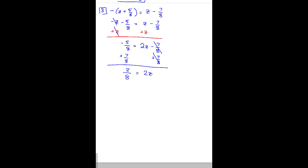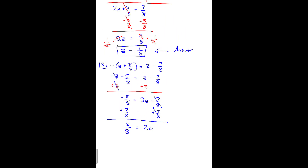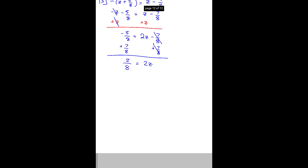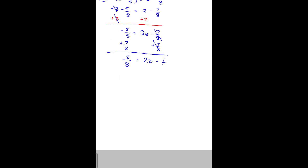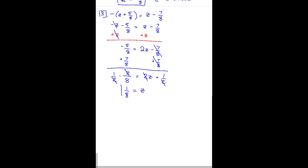Just like in the previous case, we multiply both sides by 1 half — because we have a fraction, we multiply by the reciprocal. The 2's cancel on both sides, leaving z equals 1 over 8. That's the same answer we got before, so scenarios 2 and 3 both confirm z equals 1 over 8.